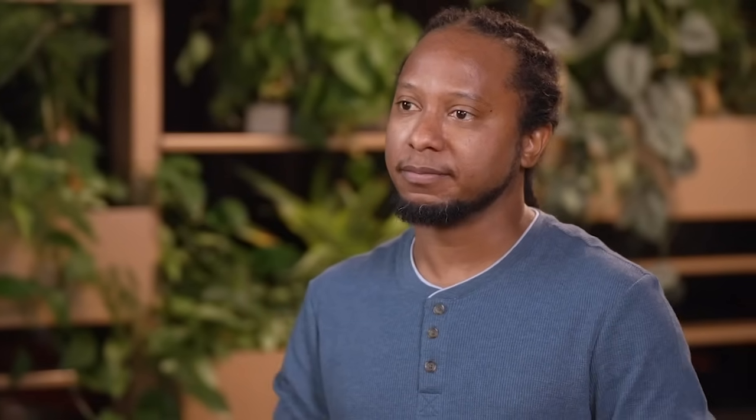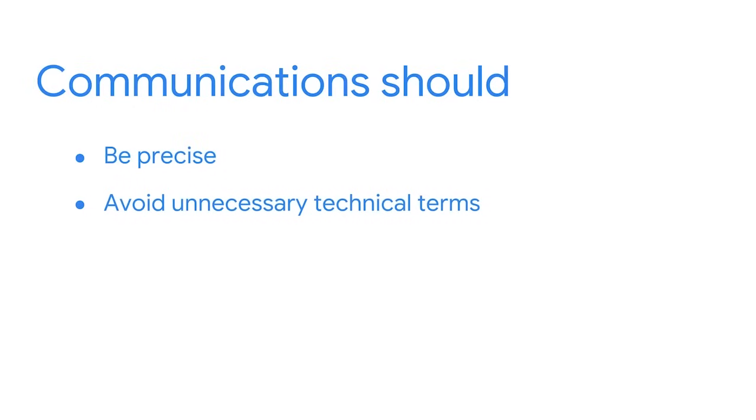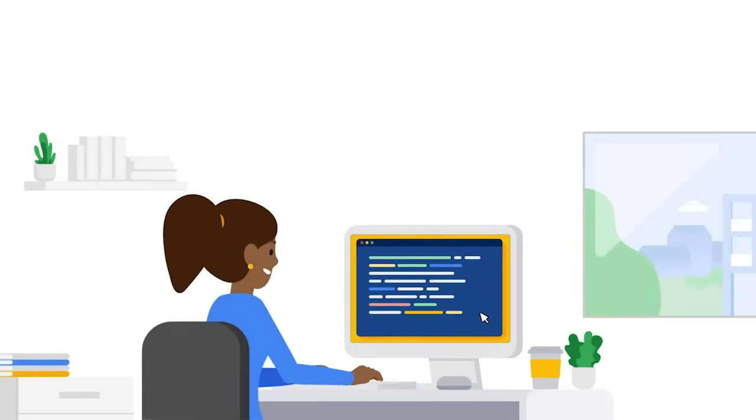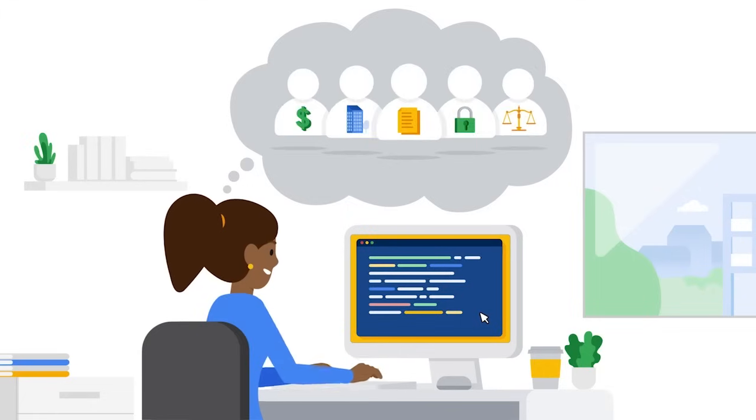Stakeholders are very busy people. Your communications should be precise, avoid unnecessary technical terms, and have a clear purpose. You don't want them to have to guess the reason for your email or why it matters to them. Ask your manager or immediate supervisor questions to find out what stakeholders need to know. A part of having a security mindset means asking questions about the assets and data you're protecting — for example, what's the most important data to protect on a daily basis, or what security tool has been most useful? Having a security mindset also means understanding what matters most to stakeholders so you know what information to share with them.